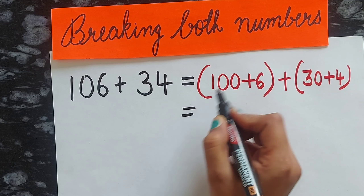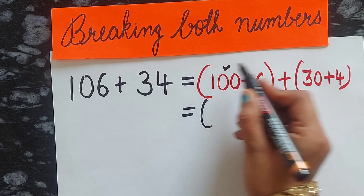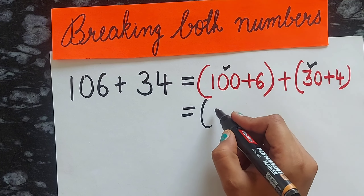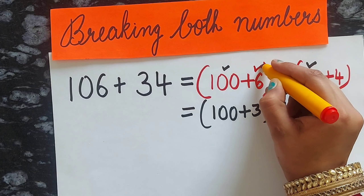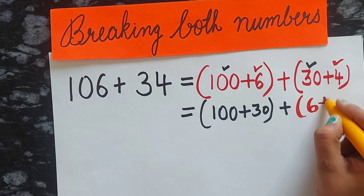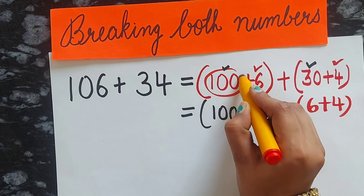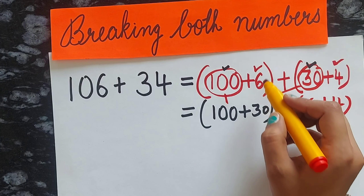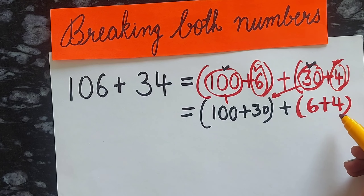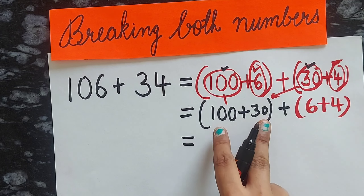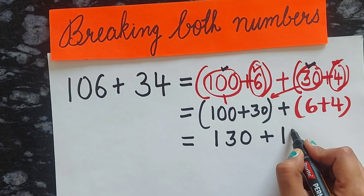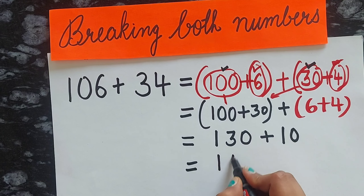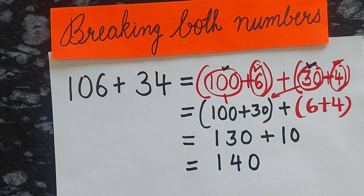Now we will add the highest numbers first: 100 plus 30. Afterwards we will add the smaller numbers: 6 plus 4. We add these to find the answer 140. This is the method of breaking both numbers.